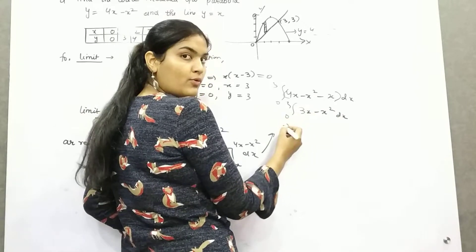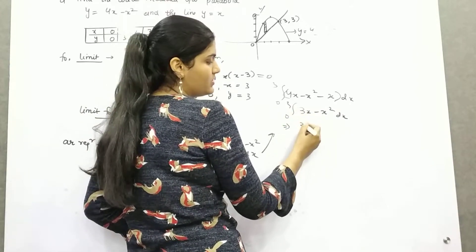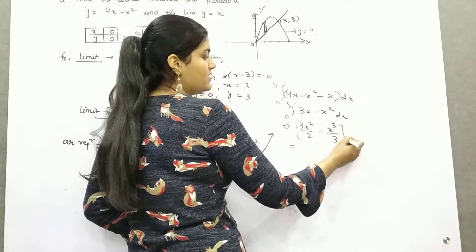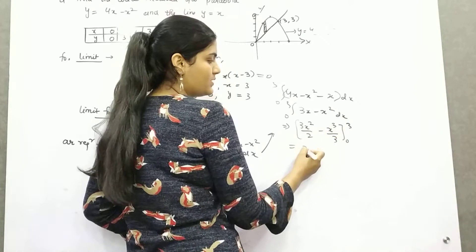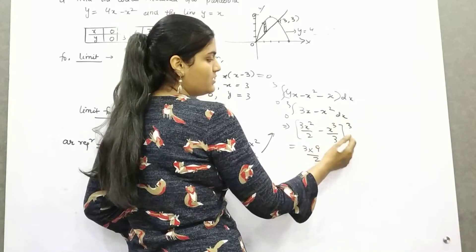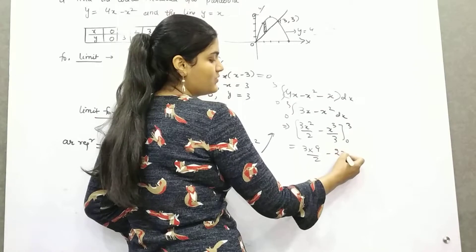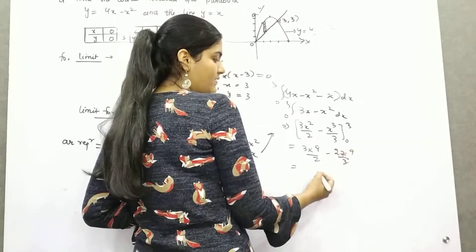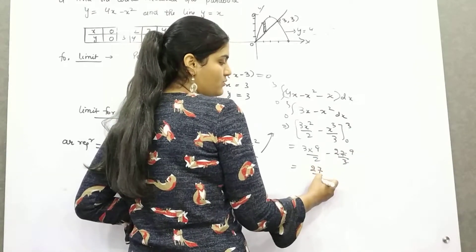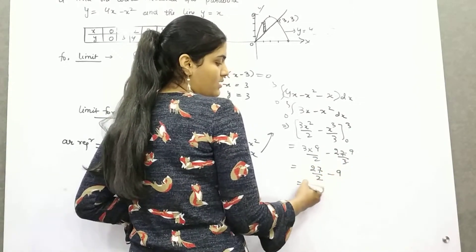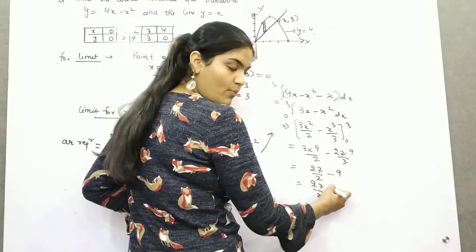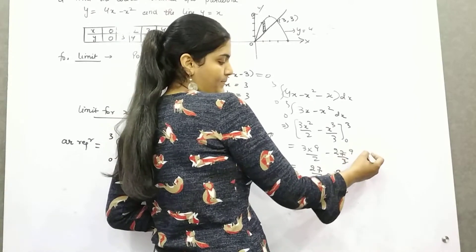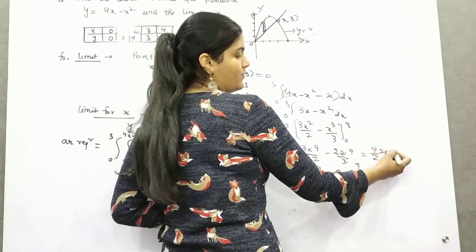So if you take the value of integration of this, integration of this is 3x squared by 2 minus x cube by 3, limit 0 to 3. Substitute here, 3 times 9 is 27 by 2 minus 27 by 3. This is 27 by 2 minus 9, which is 27 by 2 minus 18, which is 9 by 2 square units.